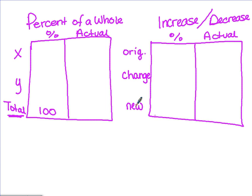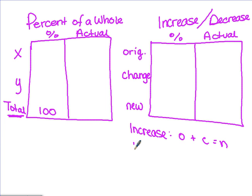The new is always going to be plus or minus the change. If it's an increase, then it's original plus the change equals new. Or if it's a decrease, it's going to be original minus the change equals the new. Then you fill in the information as it is given.